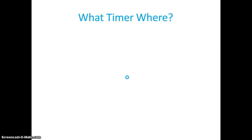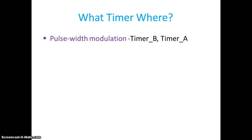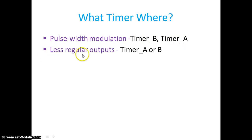Now let us see which timer to use in which scenario. We have discussed watchdog timer, basic timer, real-time clock, Timer A, and Timer B. For pulse width modulation, Timer B is the best option because you can dynamically update the pulse width using the latch in Timer B mode. Timer A also supports PWM. So for pulse width modulation, go with Timer B or Timer A.